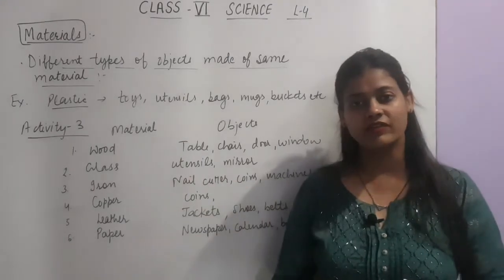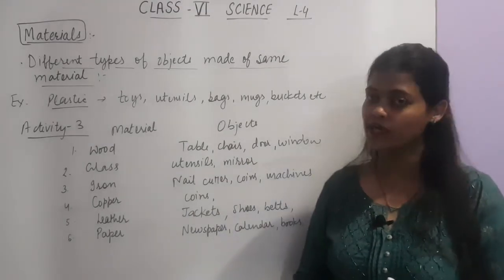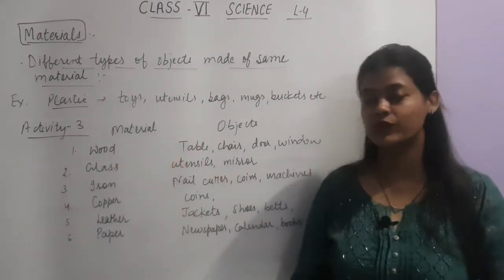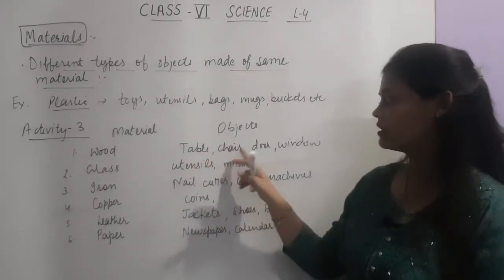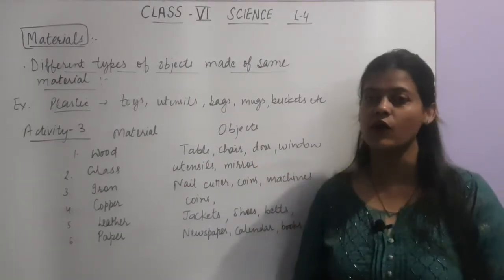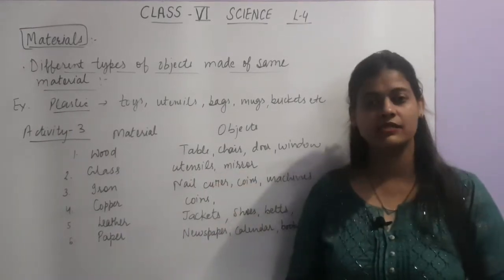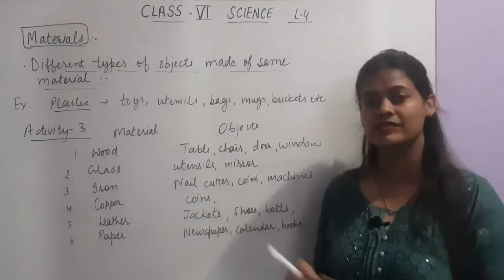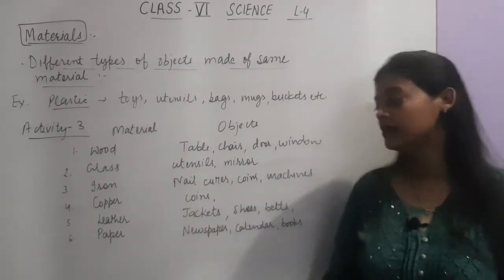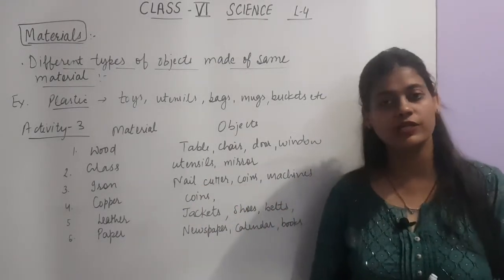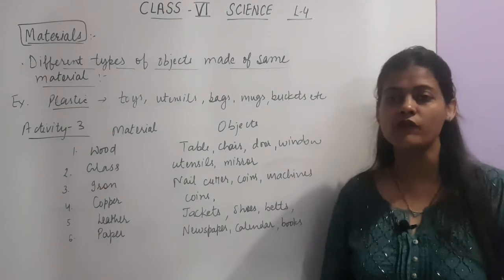Now let's see Activity 3 given in your book. Here we have given different materials and the objects that can be made from them. For example, wood is a material — wood can be used to make different objects like table, chair, door, and window; they are all made up of wood. Next is glass — glass can be used to make utensils and mirrors. Next is iron — iron can be used to make nail cutters, coins, and machines.